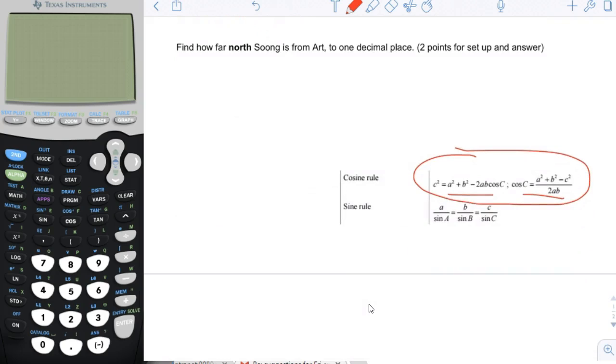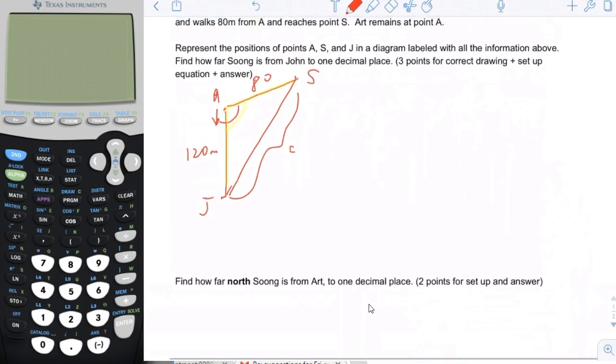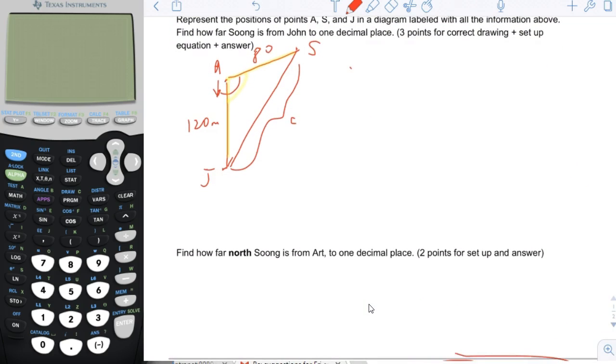If we want to find an unknown side, it's easier if we use this version because the side is on the left. If we want to find an unknown angle, we'll use this one because the angle is on the left. So I'm going to rewrite the equation here.